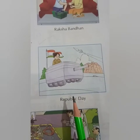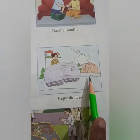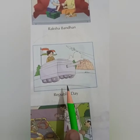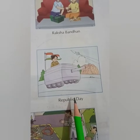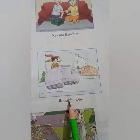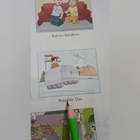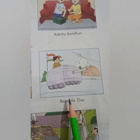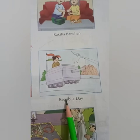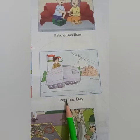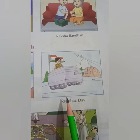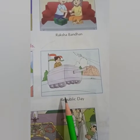Now tell me which festival is shown in this picture? The festival of Republic Day is shown in this picture. We celebrate Republic Day on 26th January every year. Republic Day is celebrated because on this day the rules of our country were made. You know, there are many rules in your school — like you are to come in school uniform and reach school on time. All these are the rules of your school. In the same way, every country has some rules.